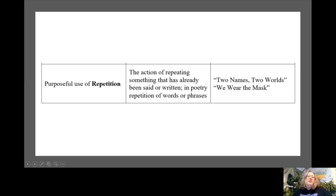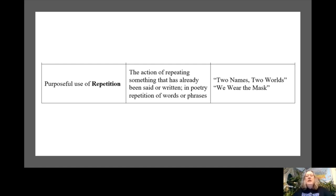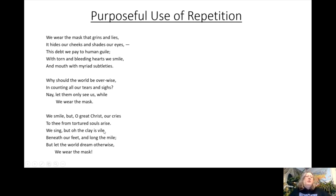We need to use purposeful repetition in our poem. The action of repeating something that has already been said or written is purposeful repetition. In poetry, we'll see repetitions of words or phrases — you've already written this definition on page 107 of your packet. We used this in 'Two Names, Two Worlds' and will use it again in 'We Wear the Mask.' In this poem, we see 'we smile' repeated twice, which is important — the repetition shows that no matter what happens, we smile because we are wearing a mask.